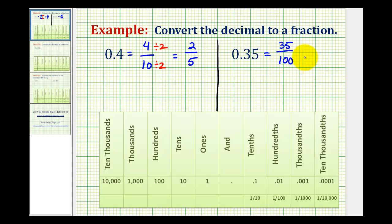But this can also be simplified. 35 and 100 share a common factor of 5. So in simplest form, this fraction would be 7 twentieths.